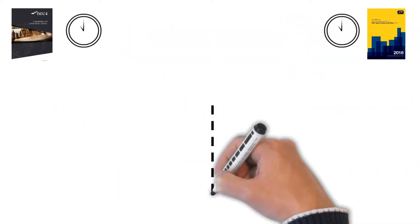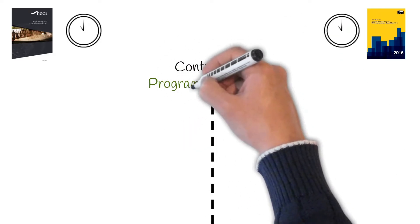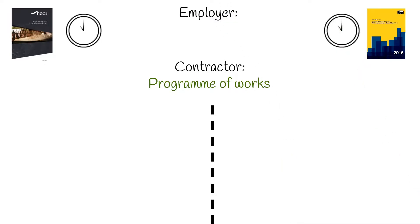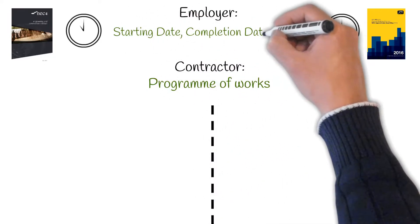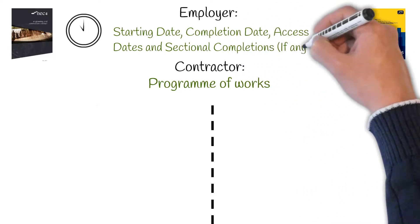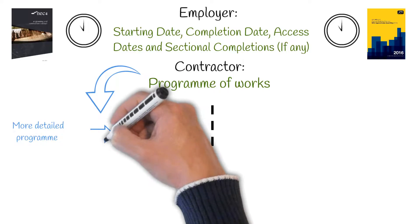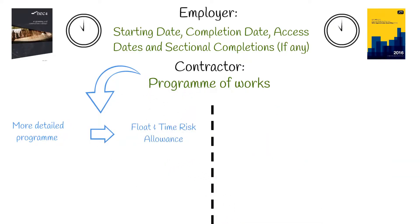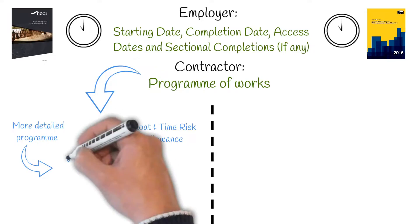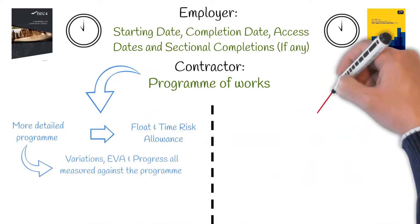Time. Both contracts require the contractor to submit a program for the works to be undertaken. Both contracts also require the employer to state a starting date, completion date, access dates and any sectional completions. However, the NEC requires a much greater level of detail, containing key concepts such as float and time risk allowance. The NEC uses the initial program as a tool for how variations, earned value management and progress of the project is assessed.